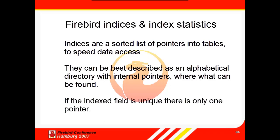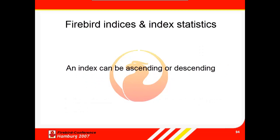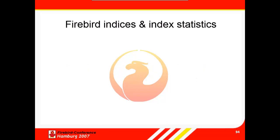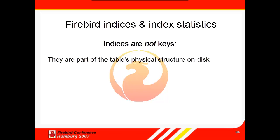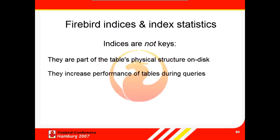If the indexed field is unique, there is only one pointer. An index can be ascending or descending, and can also be defined as unique if wished. Indices should not be confused with keys. In the relational model, a key is used to organize data logically so that specific rows can be identified. An index, however, is part of the table's physical structure on disk, and is used to increase the performance of tables during queries. Indices are therefore not a part of the relational model.